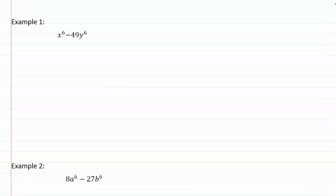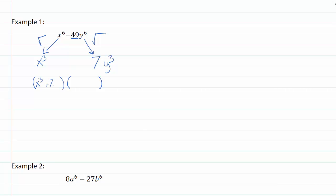In example one we have x to the sixth minus forty-nine y to the sixth. Our number here is forty-nine, which is a perfect square, so we're going to use the difference of squares formula. We take the square root of each term: the square root of x to the sixth is x to the third, and the square root of forty-nine y to the sixth gives us seven y to the third. Then we apply the difference of squares formula, giving us the square roots added together and the square roots subtracted.